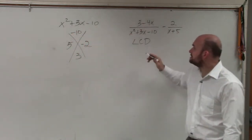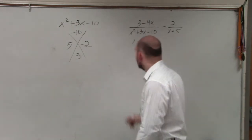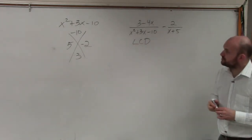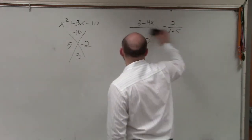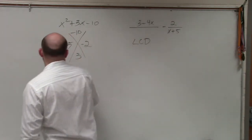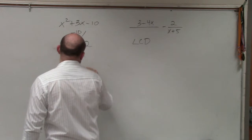Therefore, instead of writing this as x² + 3x - 10, I can rewrite this in factored form as (x + 5)(x - 2).